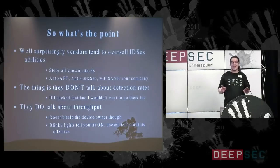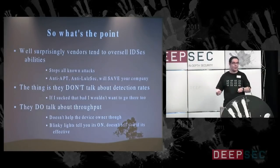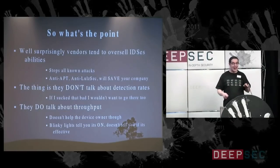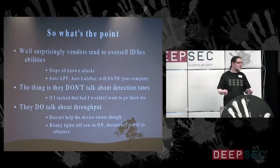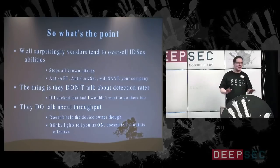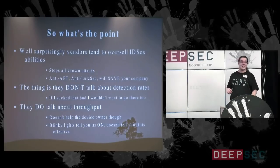If we're being really nice, detection rates are about 10%. This is where it gets really annoying: NSS invited the vendors back, stuck one of their engineers with the box, tuned it up, and detection rates went up to 98%. These boxes can do a job. However, when they ship to you, they have very liberal policies — because it's all about throughput — meaning they don't detect many things because that slows the network down. That's why auditing is important.